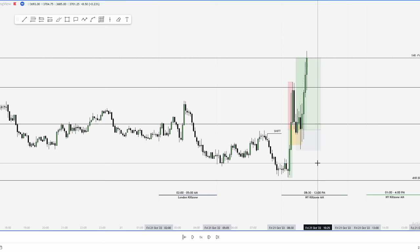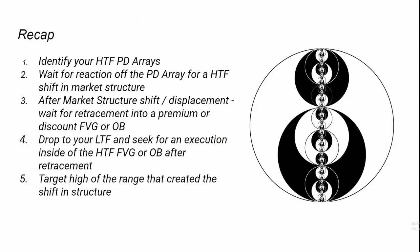To wrap up, here's the recap of our five steps: one — identify your higher time frame PD arrays; two — wait for a reaction off the PD array for a higher time frame market structure shift; three — after the market structure shift or displacement, wait for the retracement into a premium or discount fair value gap or order block; four — drop to your lower time frames and seek an execution inside the higher time frame fair value gap or order block after the retracement; five — target the high of the range that created the shift in structure. This should help you find your ideal entry and assist in your trading journey.